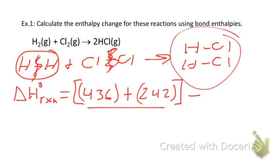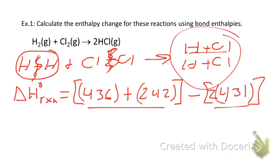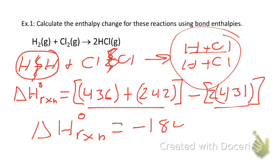Now I subtract by the energy released when we make the H-Cl single bonds. From the table, it takes 431 kilojoules per mole for an H-Cl bond, and we're forming two of them, so we multiply by two. After doing the multiplication and subtracting from our bonds broken, we get a delta H of reaction at standard conditions of negative 184 kilojoules per mole. Make sure to check the table yourself and verify these values.